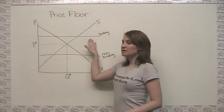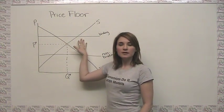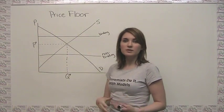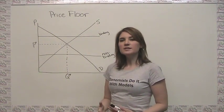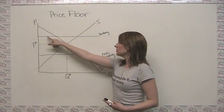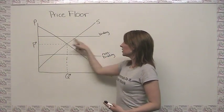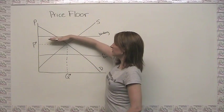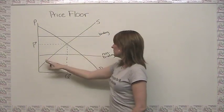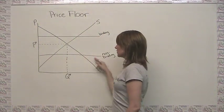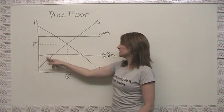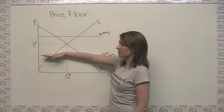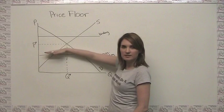We again represent a price floor as a horizontal line on our supply and demand diagram because it occurs at one particular price. But this time what we're saying is, with this price floor here, the price of our item can only be this amount or higher — meaning the legal prices available are only from this price up.